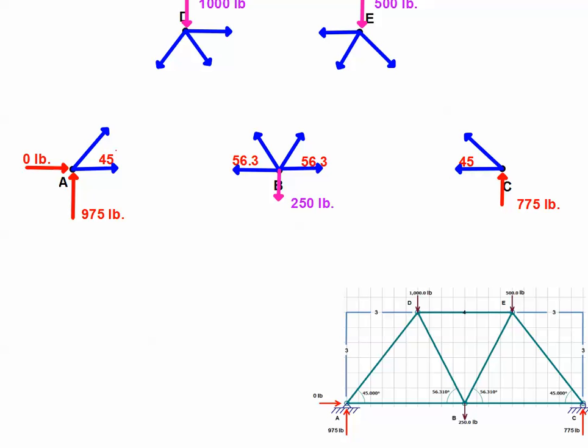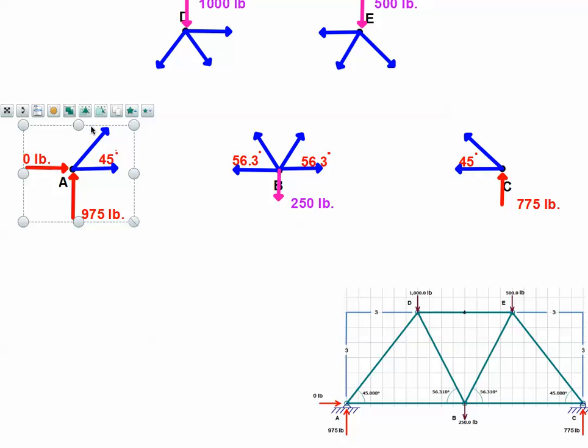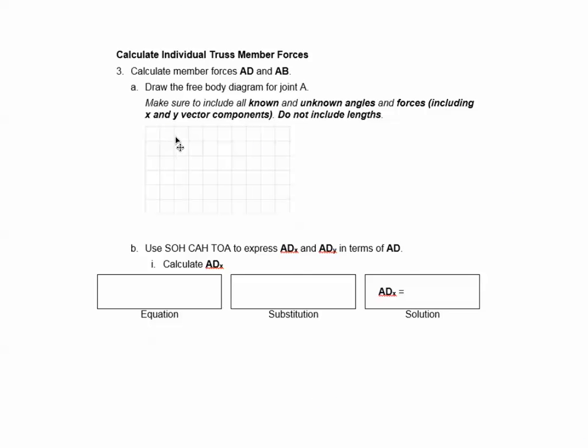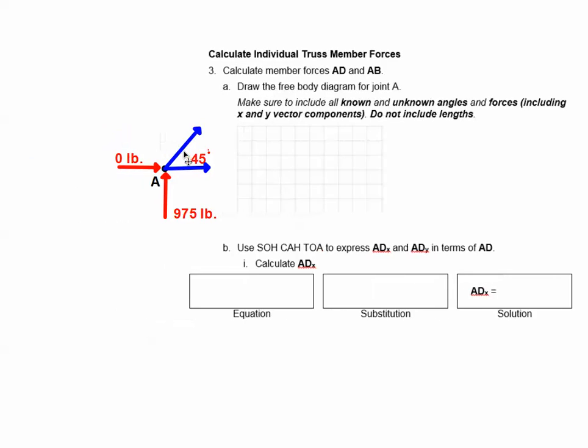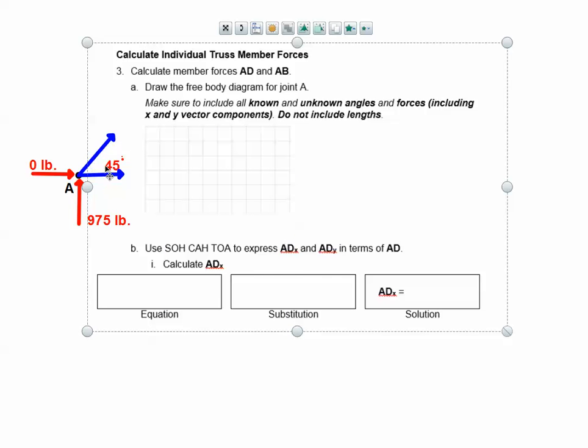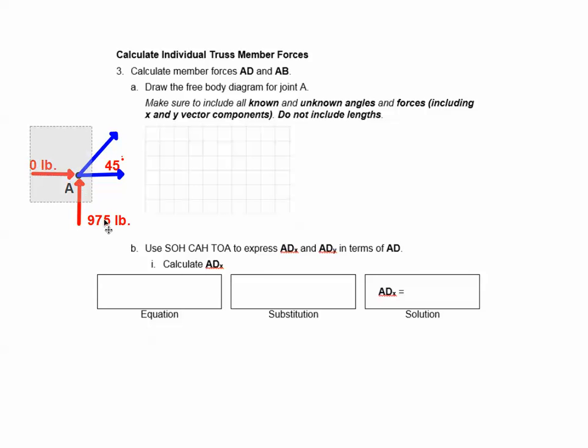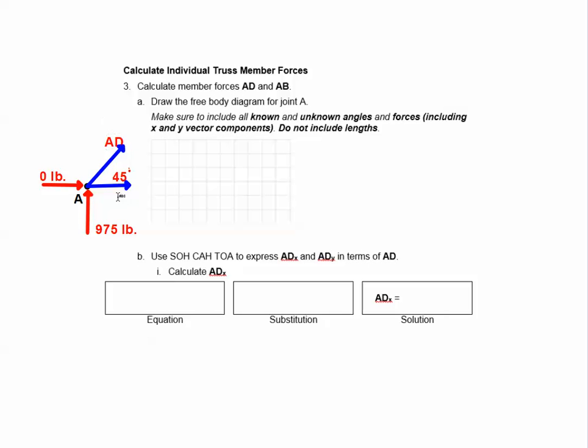If we flip back to the step-by-step truss, they want us to start at joint A. In class I said we should start with a joint that's got some known information as well as some unknown information. Point A is a pretty good place to start because AB horizontal, AD at an angle. I'm going to grab this and copy it and bring it over to my step-by-step truss diagram. Here's our free body diagram. Here's AD, and AB is this one right here. So those are our two unknowns at this point.